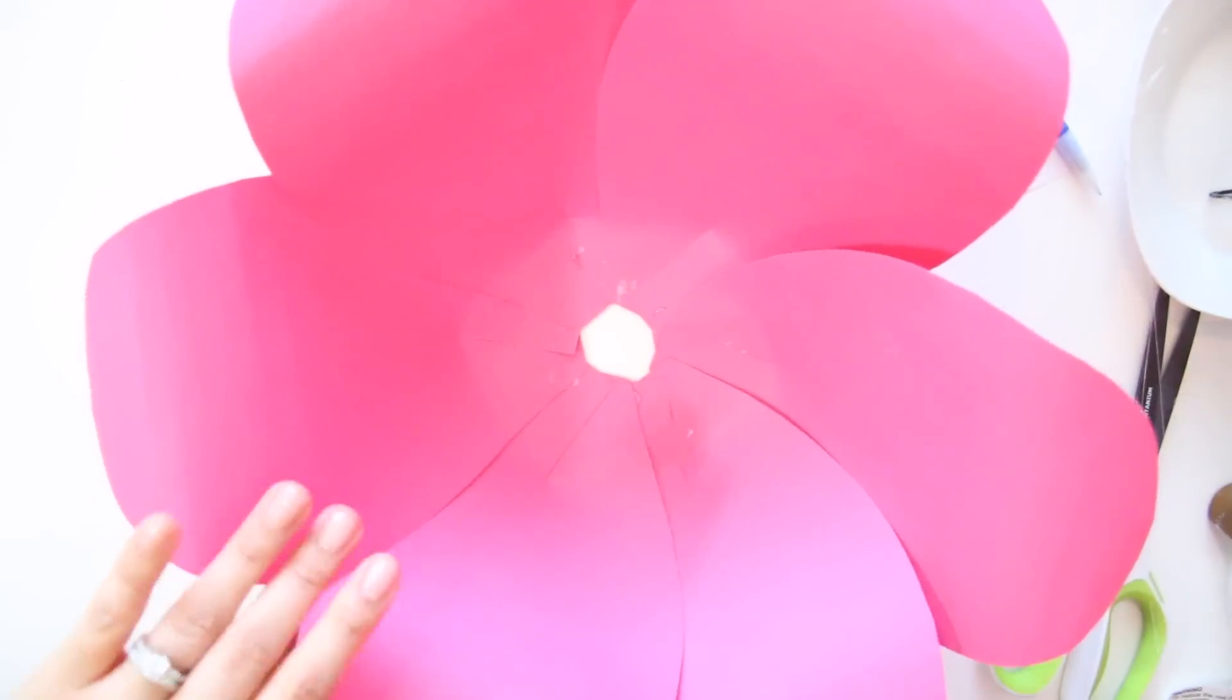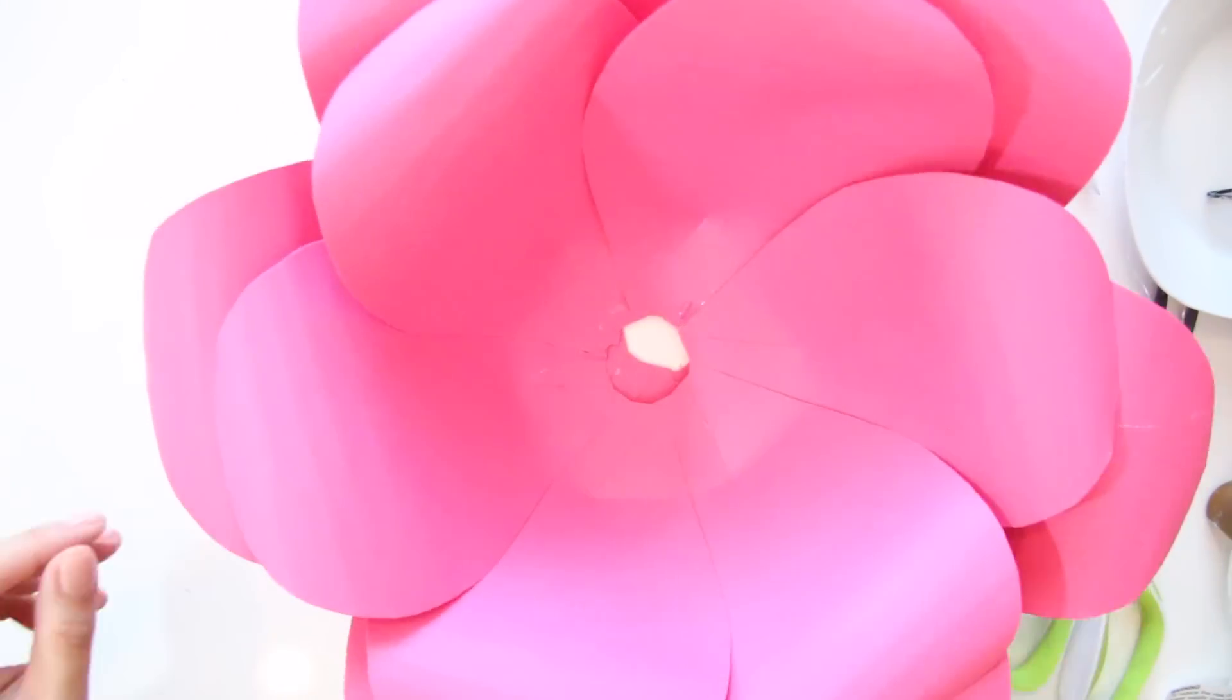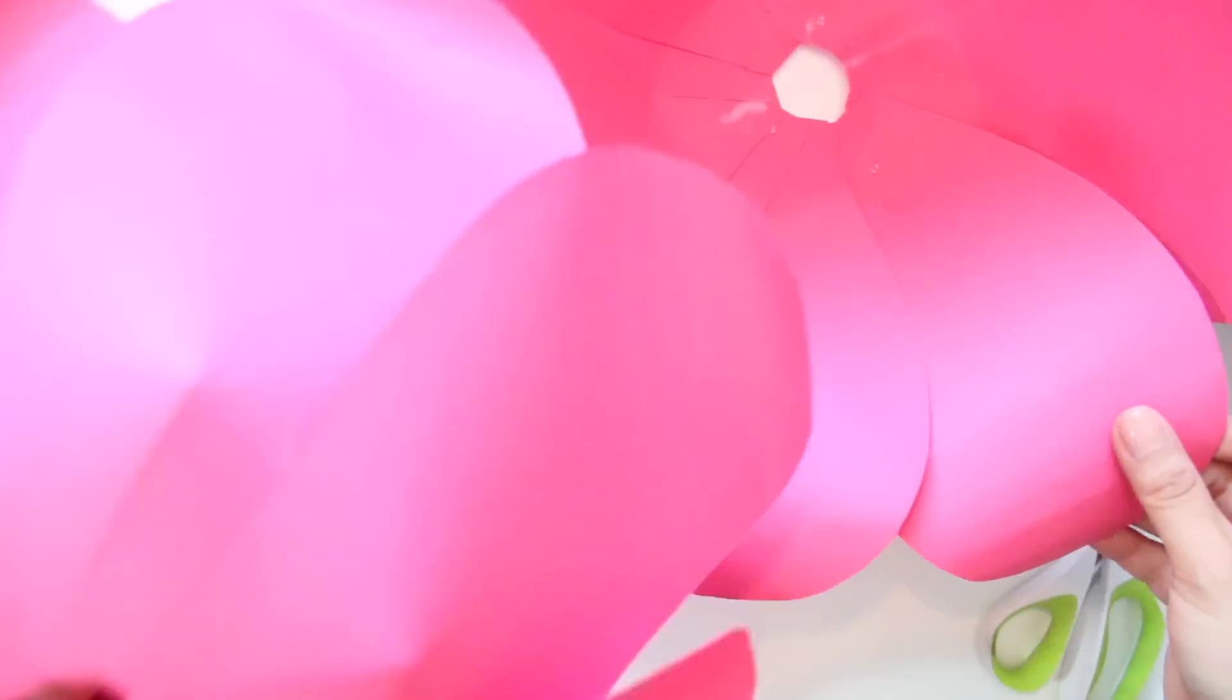Now that you have two layers, add some glue at the bottom of the medium template bowl and attach it into the large petals outer layer.